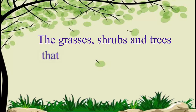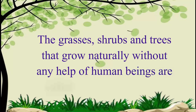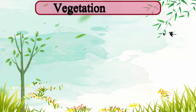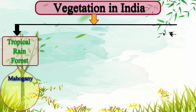The grasses, shrubs and trees that grow naturally without any help of human beings are called natural vegetation. The different types of vegetation found in India include tropical rainforests, also known as evergreen forests. The chief vegetation includes mahogany, ebony, rubber and rosewood.